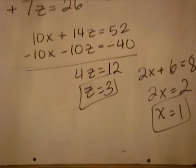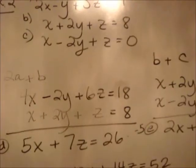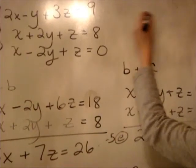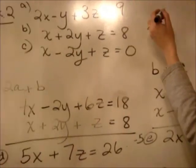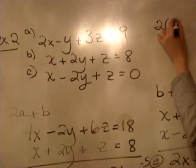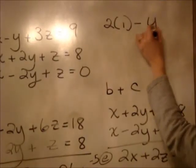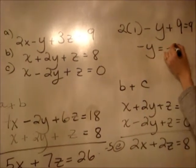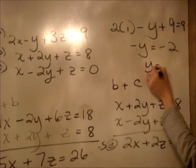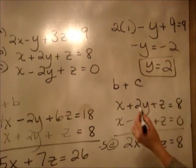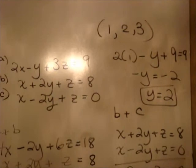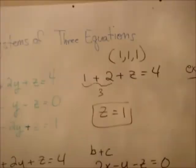Finally, we go back up to the top, put 3 in for z and 1 in for x to find y. We get 2 times 1 minus y plus 3 times 3, which is 9, equals 9. We get minus y equals minus 2, so y equals 2. Our ordered triplet is 1, 2, and 3. And that's all there is to Lesson 90.